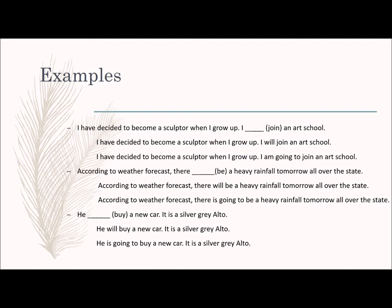That's it for simple future tense. Remember: first person is 'I' and 'we'; second person is 'you'; third person is 'he', 'she', 'it', and 'they'. Now let's move on to future continuous tense.